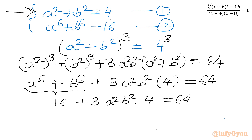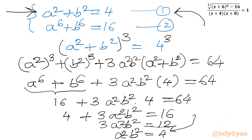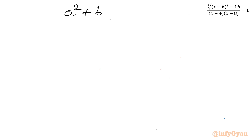Dividing the equation by 4 gives: 4 plus 3(a squared)(b squared) equal to 16. So 3(a squared)(b squared) equals 12, and dividing both sides by 3 gives a squared times b squared equals 4. Now we have two key results: a squared plus b squared equals 4, and a squared times b squared equals 4.